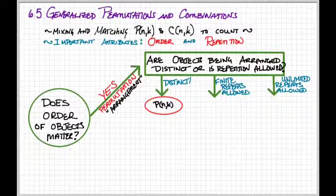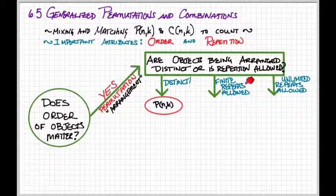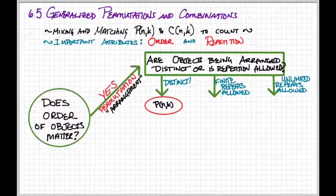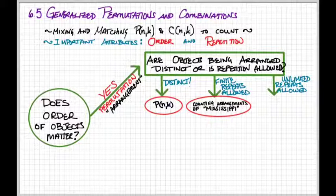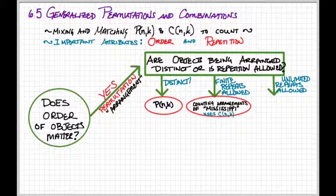If sometimes objects can be repeated, but there is a limit to the repetitions allowed, we call these finite repetitions. An example might be trying to count the rearrangements of the letters in the word Mississippi.